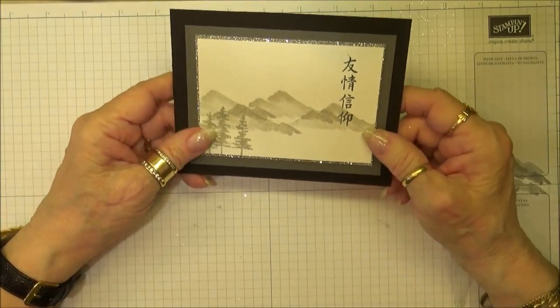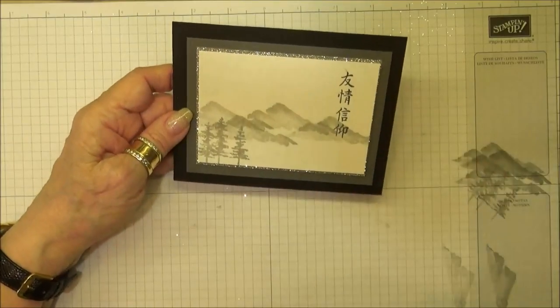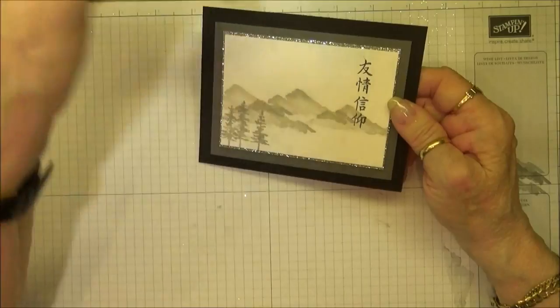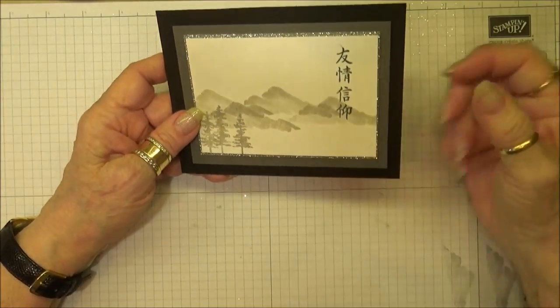The other thing you do not get is the Tombow liquid glue showing through the cardstock. Our whisper white is a very thin cardstock and sometimes you can see the glue through it, which is just not really an attractive look. Using that little trick works great.